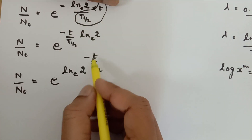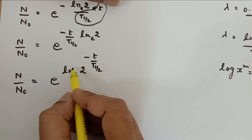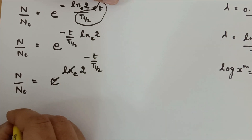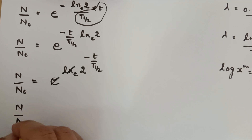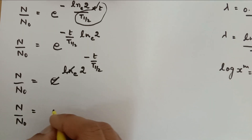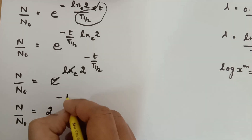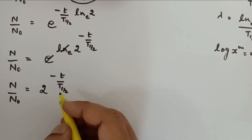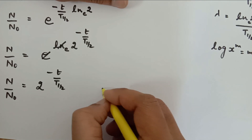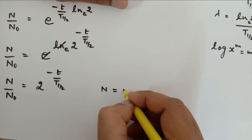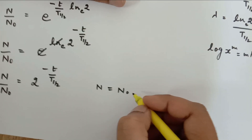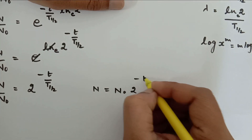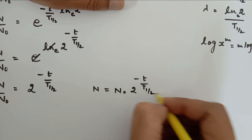Now ln and e cancel each other, so we have the simplified version: n upon n₀ is equal to 2 raised to minus t upon t-half, which can be further written as n equals n₀ times 2 raised to minus t upon t-half.